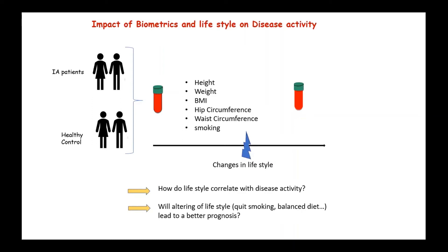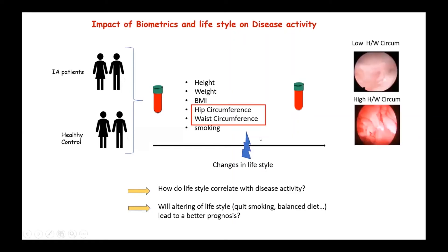To give you a small example of why this is important, I'm going to show you some data we've collected over the last three years, in which we measured hip and waist circumference and correlated these with the inflammatory state within the joint. Here at the top, we have a joint visualized with a small camera within the knee. We can see there is very low inflammation, which was associated with low hip and waist circumference. But when patients had high hip and waist circumference, we can clearly see much more marked inflammation within the joint, suggesting that weight could impact the inflammatory state at the site of inflammation.